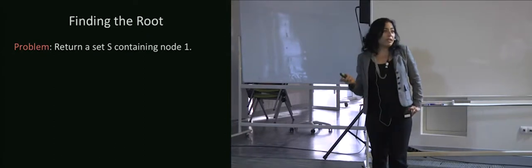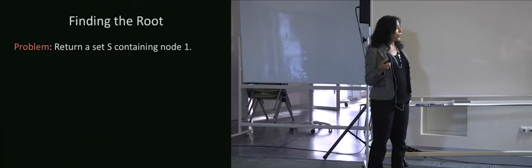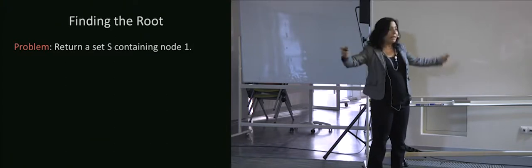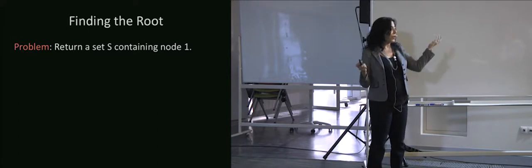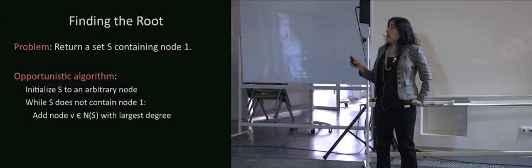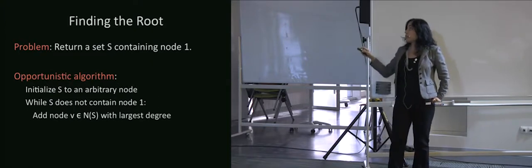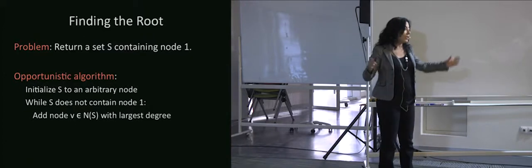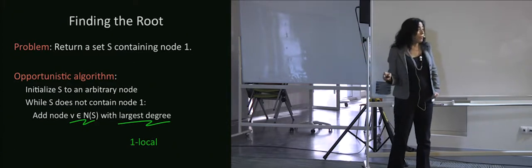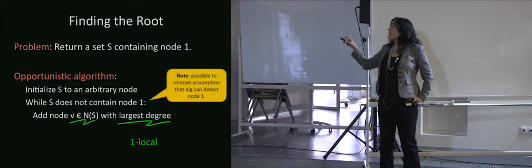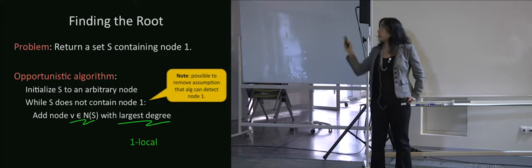Let's say I want to find the root of my preferential attachment network. It's very useful: if I can find the root, I can connect S to T nicely by connecting both to the root. An opportunistic algorithm: my set starts at an arbitrary node; if it doesn't contain the root, I add the node in the neighborhood with the largest degree. It's just greedy, and it's one-local because I look at my neighborhood.